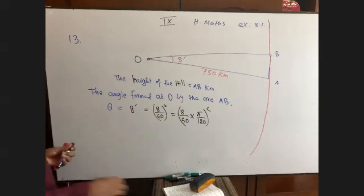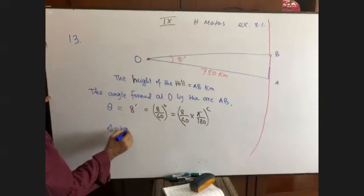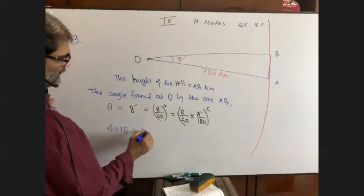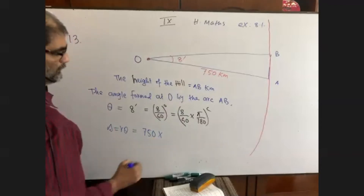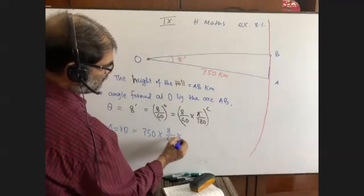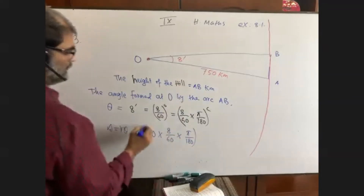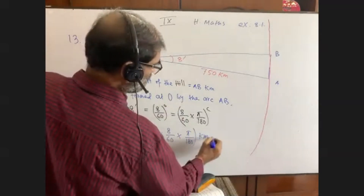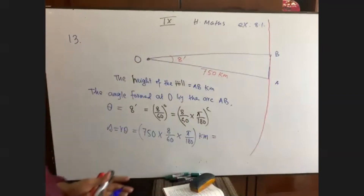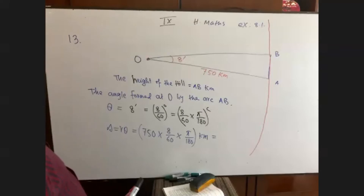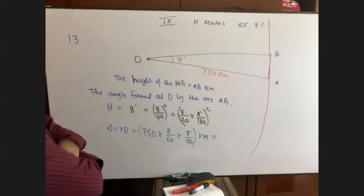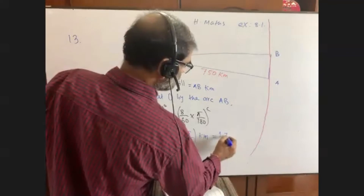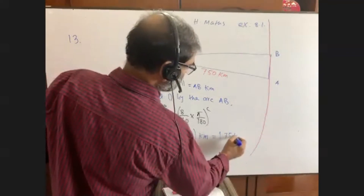The formula is S equals R theta. Here R is 750 kilometers. So S equals 750 into 8 by 60 into pi by 180 kilometers. The result is approximately 1.7453 kilometers.